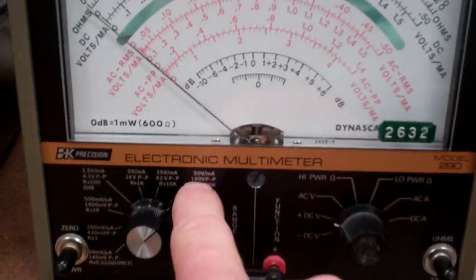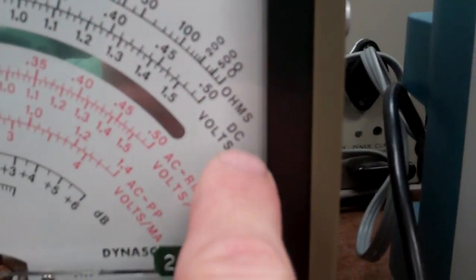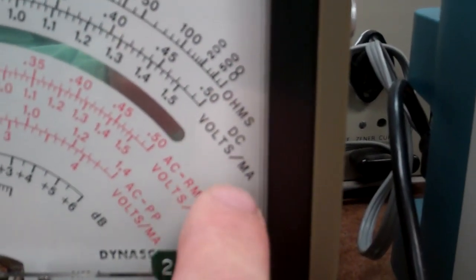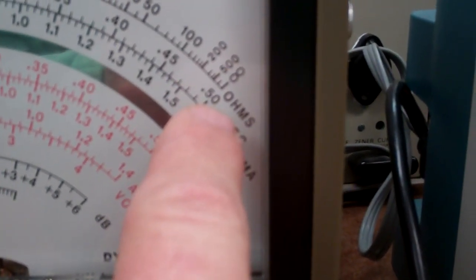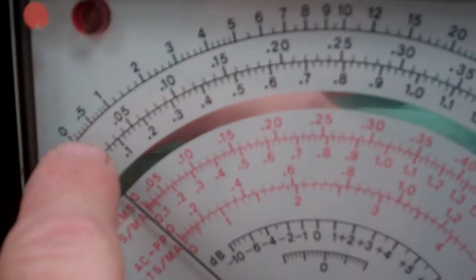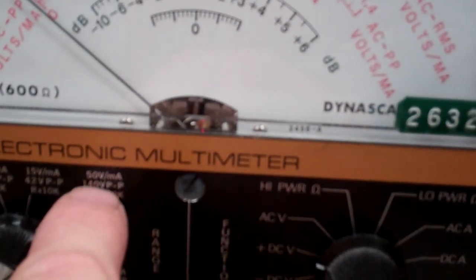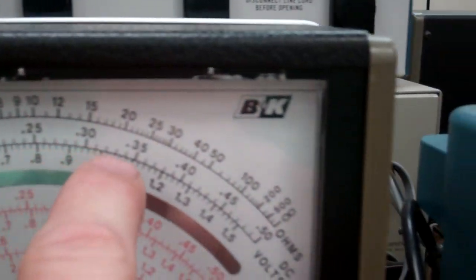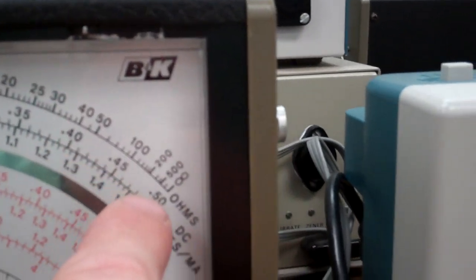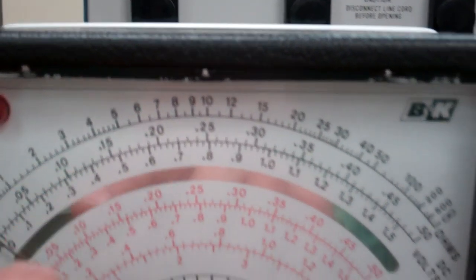So if I use a 50 volt scale, then over here if you notice it says DC volts, and don't worry about the milliamps because we don't have a current on this, it says 0.50. That's the scale that we're going to use. But instead of being 0.5, we're now going to be looking at it as being 50. So whatever the value is here, it's going to be 30, 40, 50, 20, 10, 15, 12.